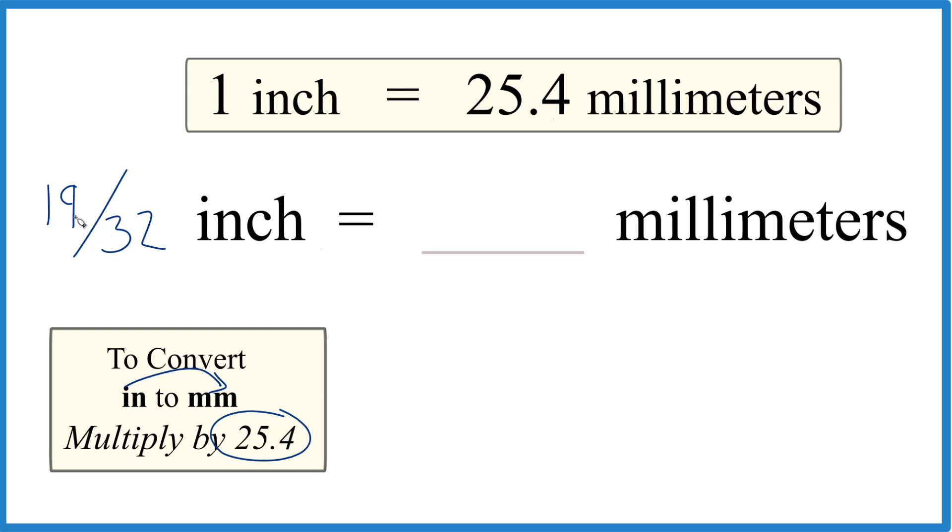The other way to do it is convert this to a decimal. Divide 19 by 32, that gives you 0.59375, so I'm going to call it 0.594, that's our inches.